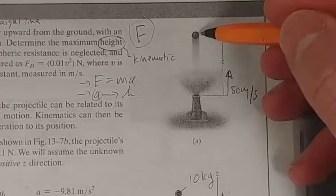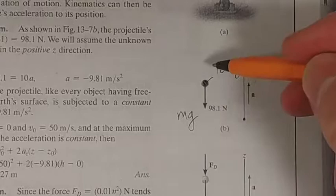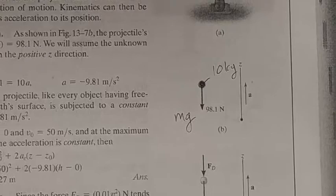It has a mass of 10 kilograms. What are the forces acting on this projectile as it goes up? And there's no atmospheric resistance. The only force will be mg. That's it, all right? So it's moving up, but the only force acting on this particle is mg.